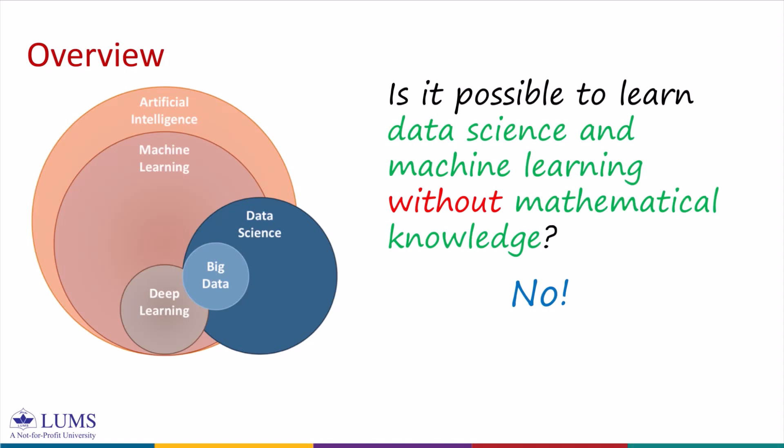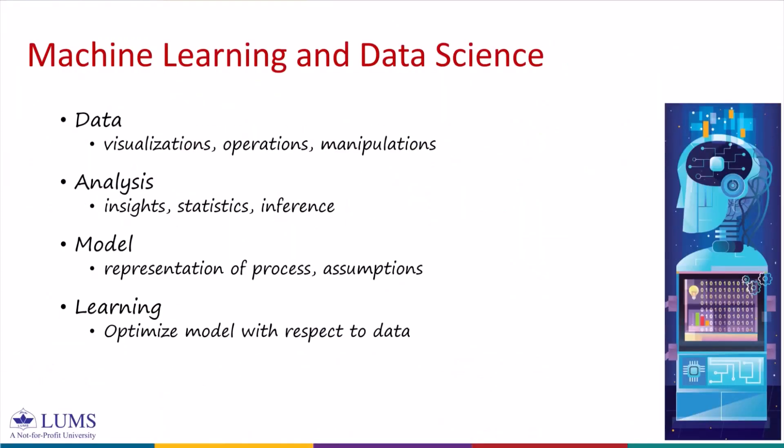To understand this further, we look at the core components of machine learning and data science, which include data analysis, model, and learning. These components have a direct relationship with the mathematical foundations in the areas of linear algebra, analytic geometry, calculus, and probability theory.